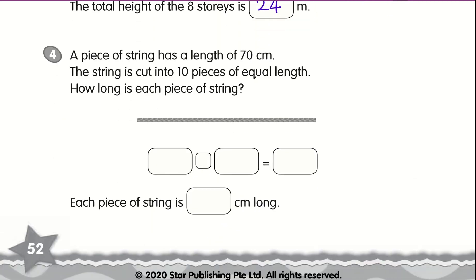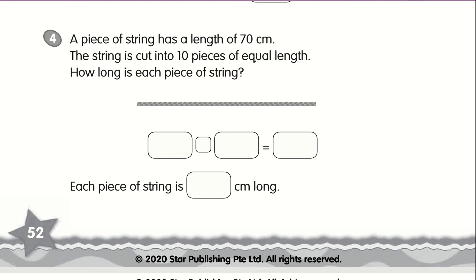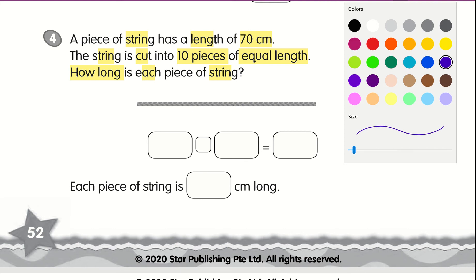The next question. A piece of string has a length of 70 centimeters. The string is cut into 10 pieces of equal length. How long is each piece of string? We know that the string has a length of 70 centimeters in total. So again, we write down our G, E, T. So 70 is our total.